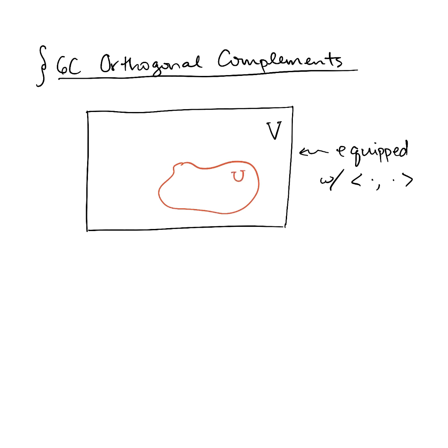Now notice the choice of words there. I said subset, not subspace. You can formulate this notion of orthogonal complement for any subset sitting inside your inner product space. Now it'll turn out that for us most of the time this will be most useful when we think of U as being a subspace. But in terms of the definition, all we need is a subset.